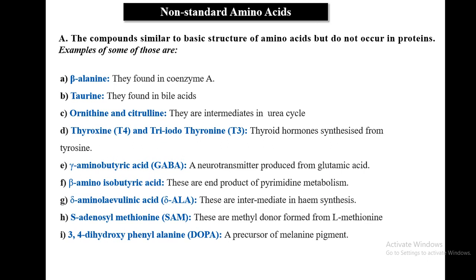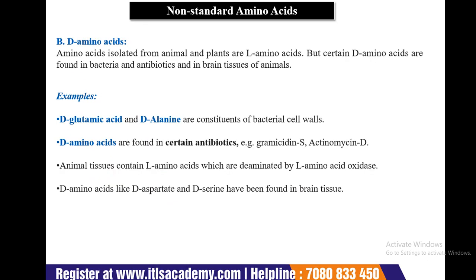Other non-standard amino acids include intermediates in heme synthesis such as delta-aminolevulinic acid; S-adenosylmethionine, a methyl donor formed from L-methionine; and DOPA (3,4-dihydroxyphenylalanine), a precursor for melanin pigment. D-amino acids are isolated from animals and plants, which normally contain L-amino acids, but certain D-amino acids are found in bacteria, antibiotics, and brain tissue — for example, D-glutamic acid and D-alanine are constituents of bacterial cell walls, and D-aspartate and D-serine are found in brain tissue.